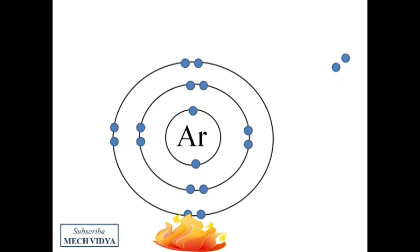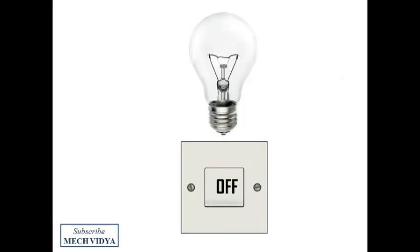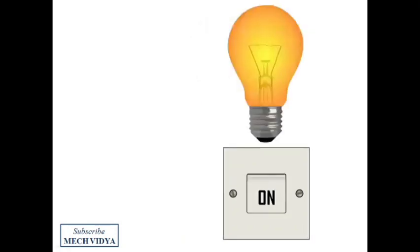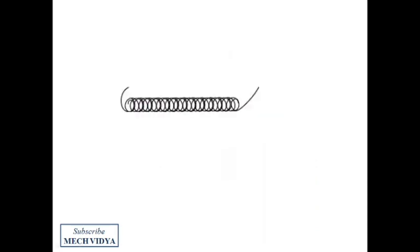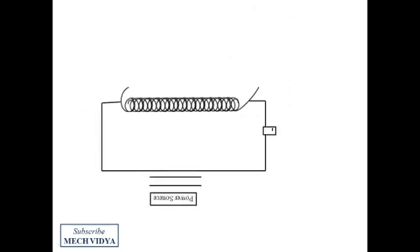Let us now try to understand the physics behind the electron emission in detail. In normal bulbs, we have a tungsten filament. When the switch is put on, electricity flows through this filament. Tungsten offers huge resistance to the flow of electricity through it, and as a result, this energy gets converted into heat and light. Similarly, in electron beam welding, we have a cathode, which is nothing but a tungsten filament. When electricity passes through the cathode, free electrons are liberated, and millions of such free electrons are used to weld the workpieces.